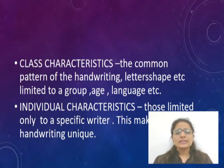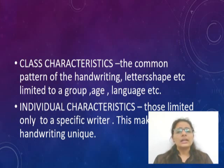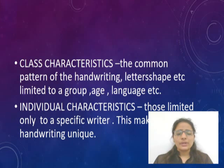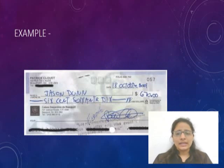Class characteristics are those whose letter shapes are limited to a group, age, or language. Individual characteristics are those limited only to a specific writer — meaning individual characteristics are unique to an individual. Class characteristics can exclude a group but not an individual, whereas with individual characteristics we can exclude a person or perform individualization.